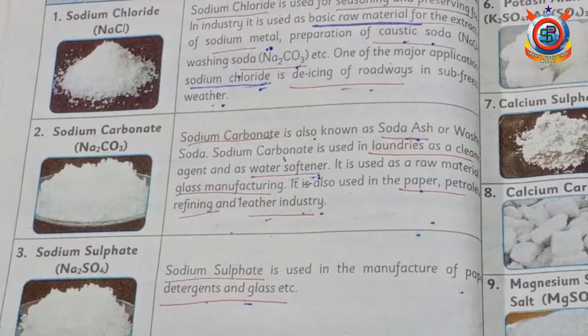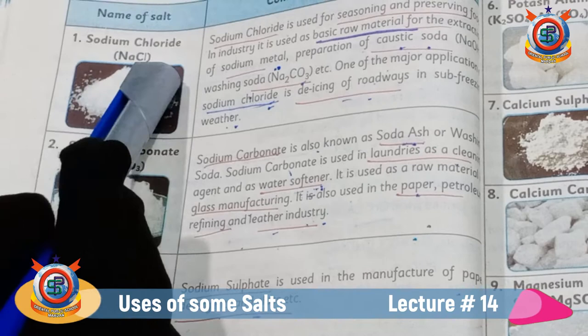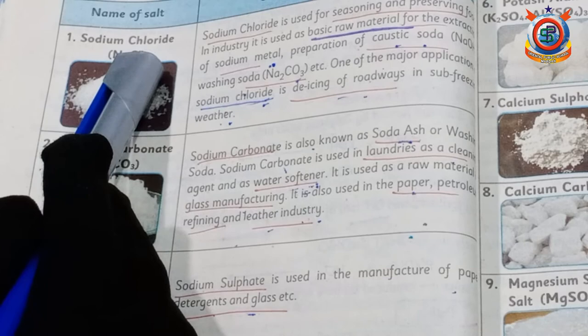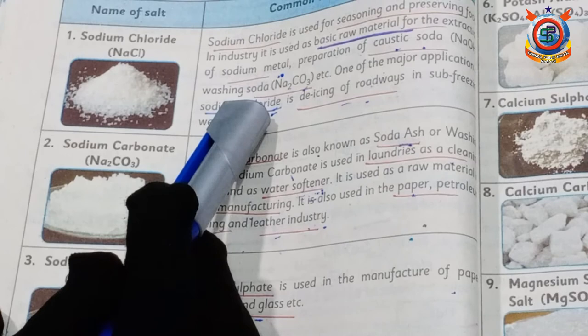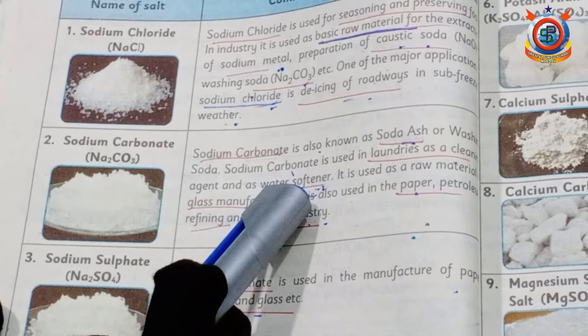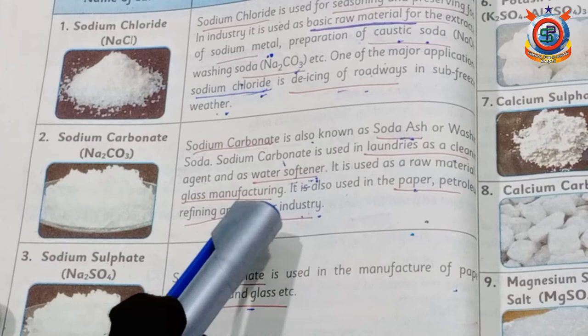Today we discussed the uses of salts. Sodium chloride is a raw material for the manufacturing of sodium metal, caustic soda, and washing soda, and is also used as a de-icer for roadways. Sodium carbonate, also known as soda ash, is used as a cleansing agent and water softener, and as a raw material for glass manufacturing. It is also used in paper, petroleum refining, and leather industries.